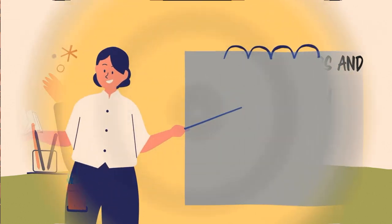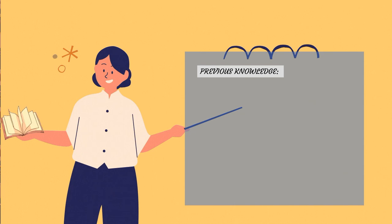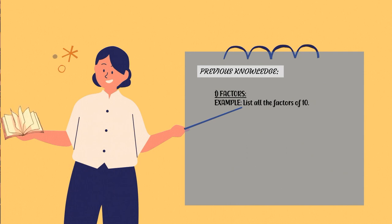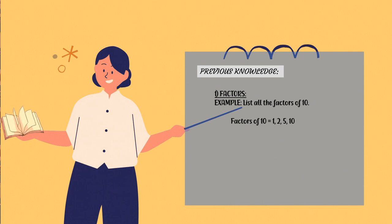In our previous lesson, you have learned about how to find factors. For example, list all the factors of 10. You can list down all the factors of 10 — which numbers are divisible into 10. So, factors of 10 equal to 1, 2, 5, and 10.